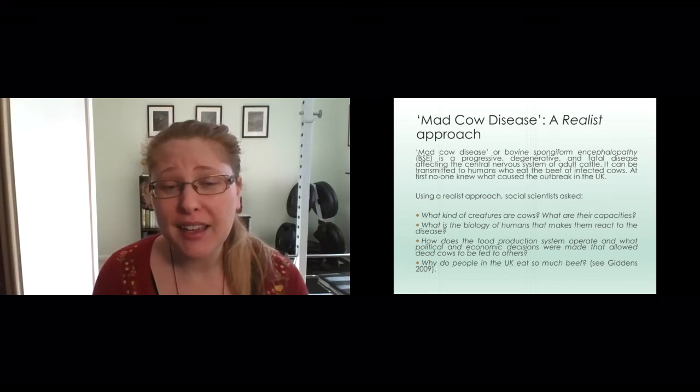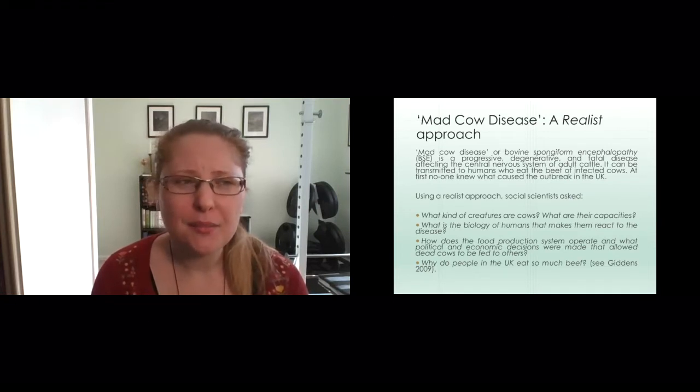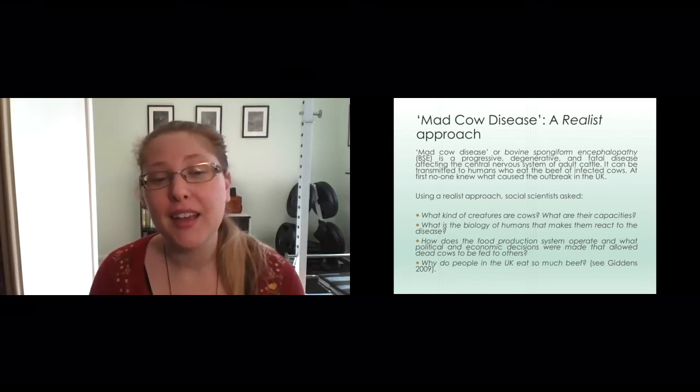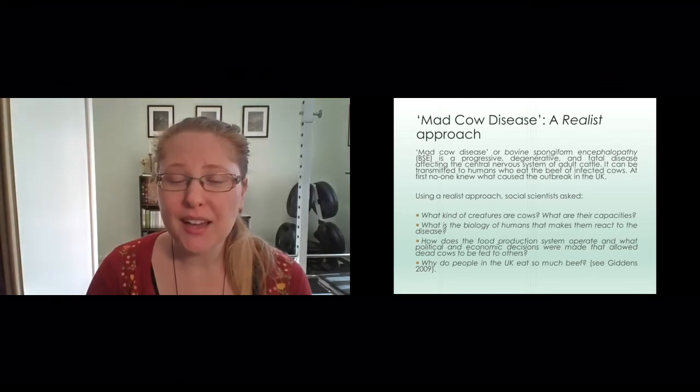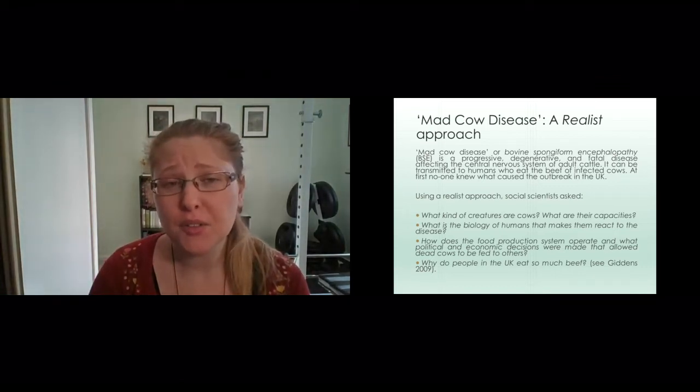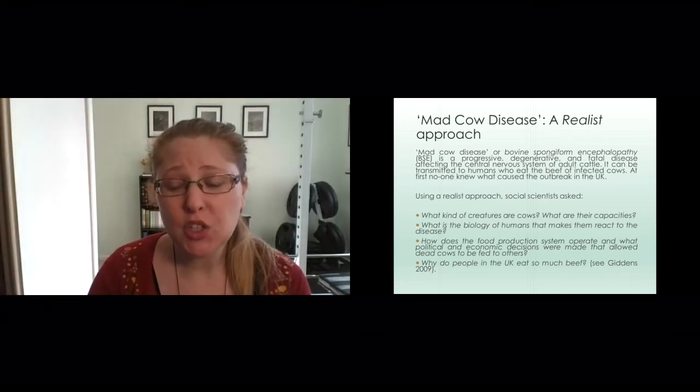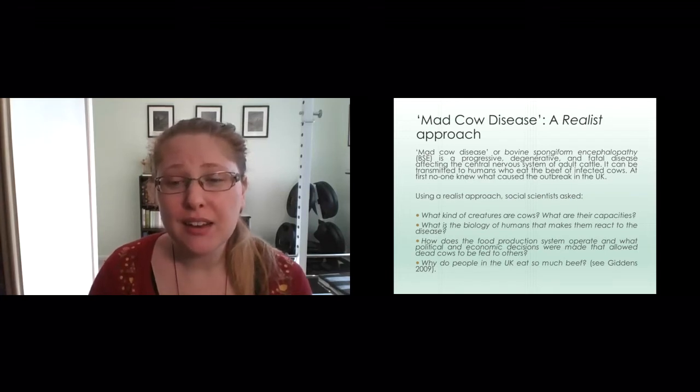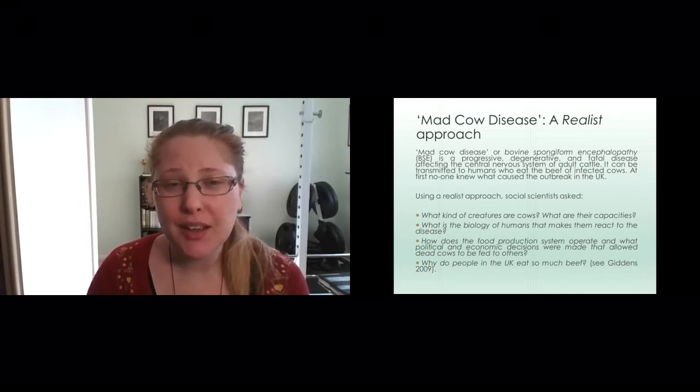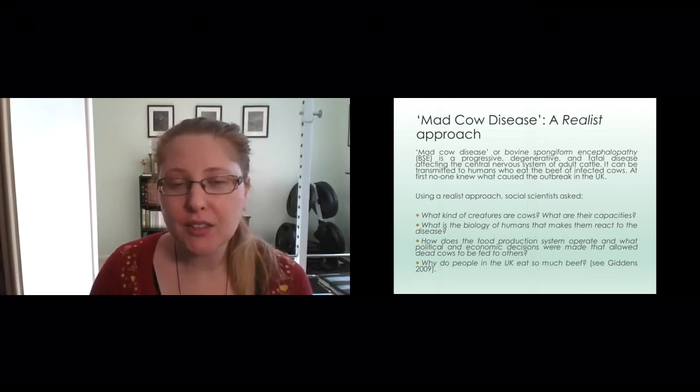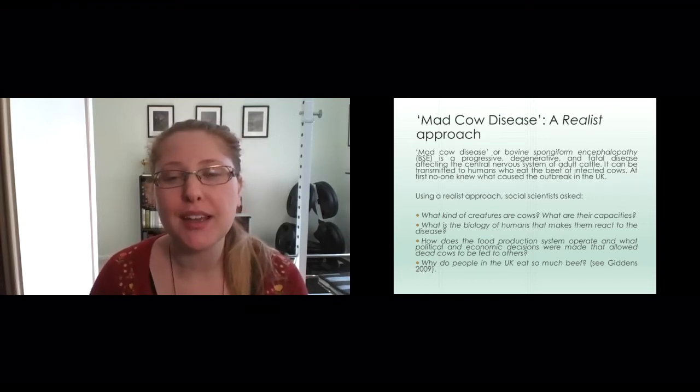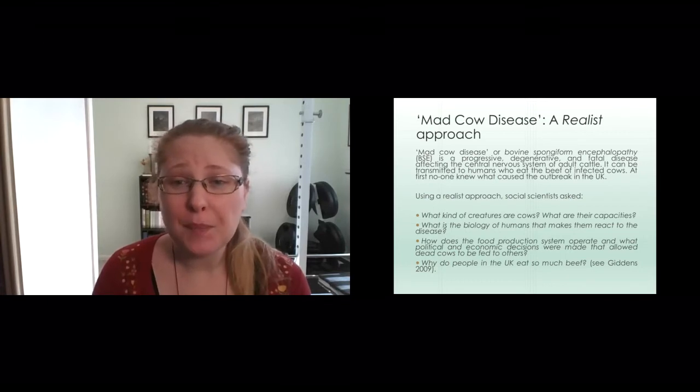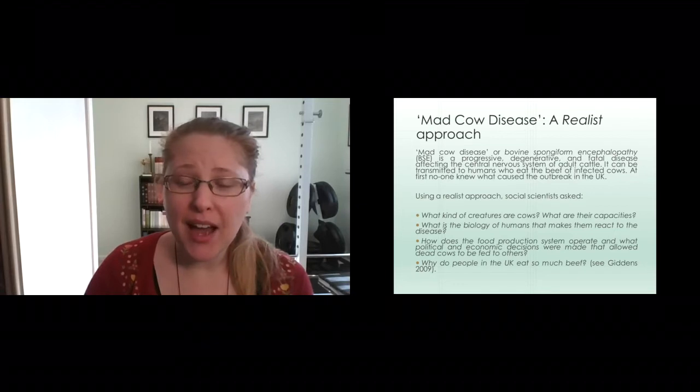Essentially, mad cow disease is a disease that affects cattle, and it came about in the 1980s in the UK. As part of the post-World War II intensification of agriculture in the UK, there was an effort to ensure that the UK could feed all of its citizens. There was pressure to produce more food from less land and less resources.